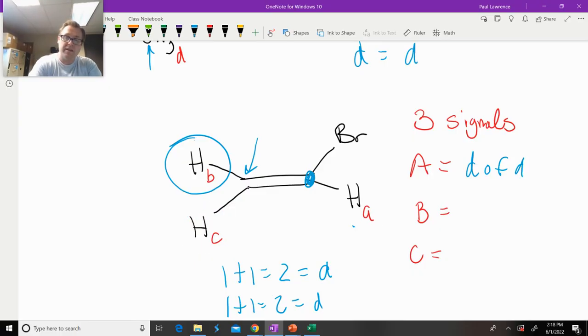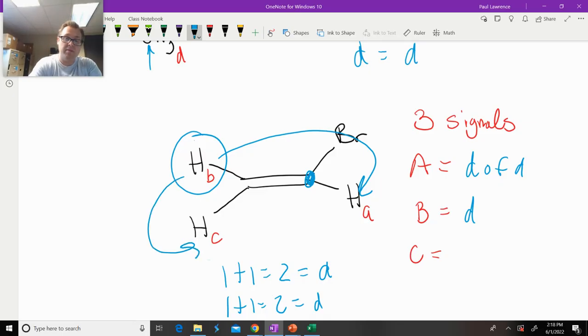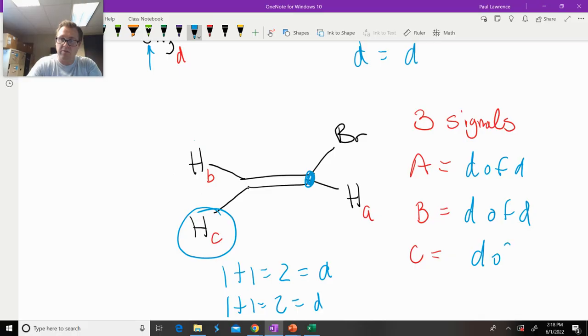Now if we go through this analysis for everyone, you would see that you will get the same answer. Because if we look at, let's do HB. What is the splitting pattern of HB? HB is going to be split by HA as a doublet. And then HB is going to be split by HC as a doublet. So a doublet of a doublet. And then the same answer for HC, doublet of a doublet. So that's another complex splitting pattern.